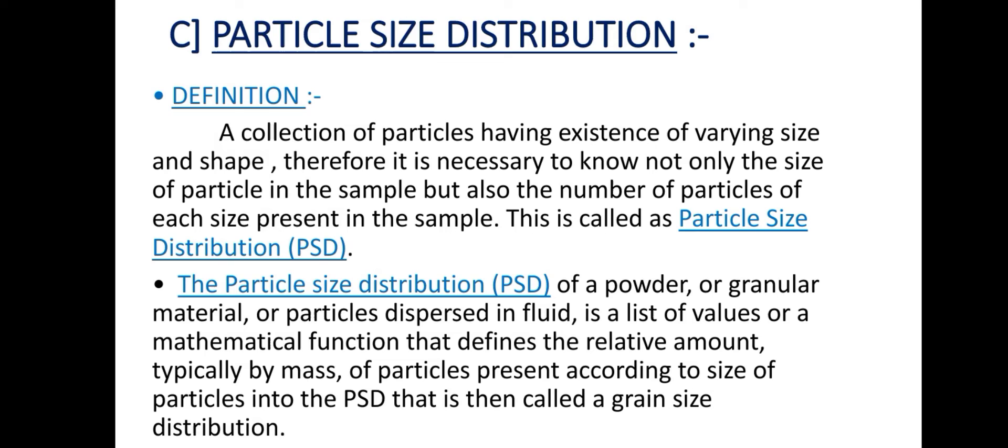The particle size distribution of a powder, or granular material, or particles dispersed in fluid, is a list of values or a mathematical function that defines the relative amount, typically by mass, of particles present according to size of particles. This is then called a grain size distribution.